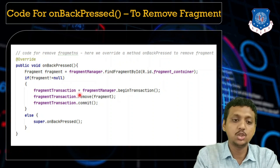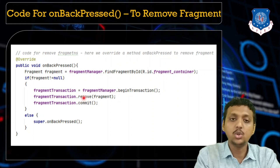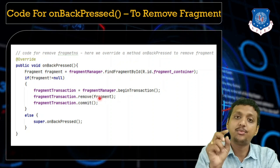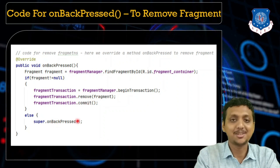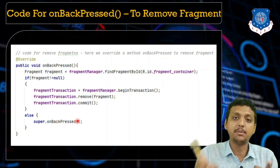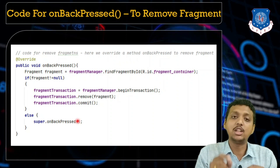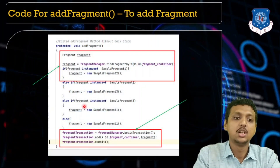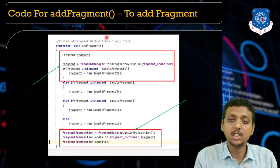If the fragment is not equal to null — meaning there is a fragment present — then we initialize a FragmentTransaction and call the remove fragment method. We find the fragment ID from the fragment container, remove it, and commit. So when you click the back button, the fragment will be removed.